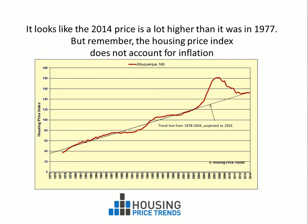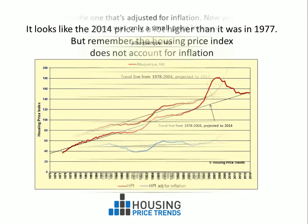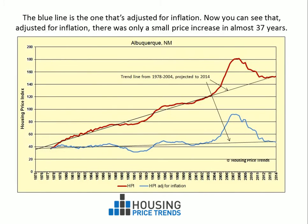So here's the same chart with the data adjusted for inflation. The blue line is the one that's adjusted for inflation. Now you can see that adjusted for inflation, there was only a small increase in almost 37 years. That's a much different picture.